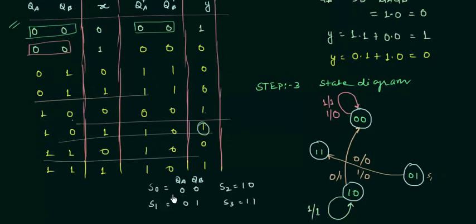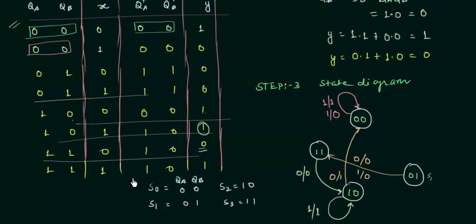For the second-to-last case, when on S3 (1,1) and input X=0, we move to state 1,0 which is S2, with output 0 — so we write 0/0 on that transition. For the last case, when on S3 and input X=1, we also go to S2, with output 1 — so we write 1/1. Both inputs from S3 lead to S2.